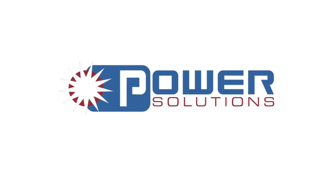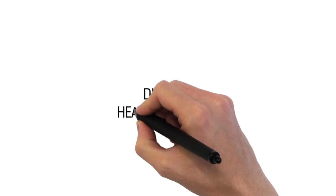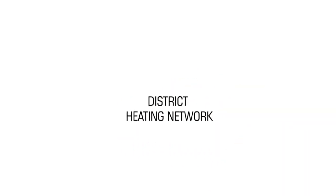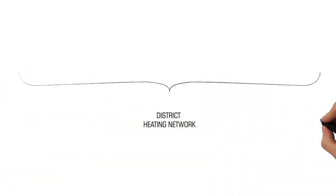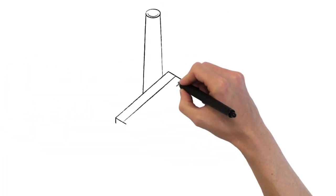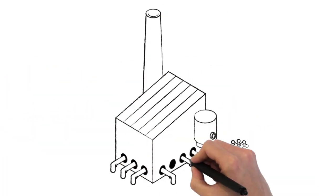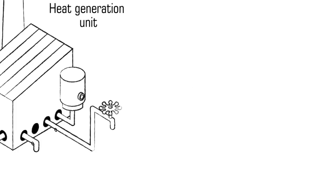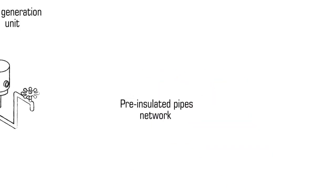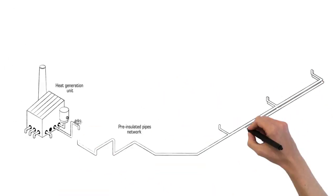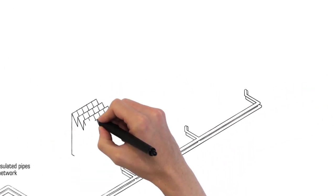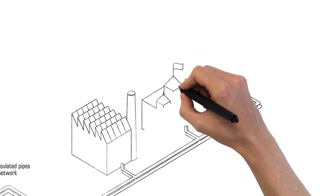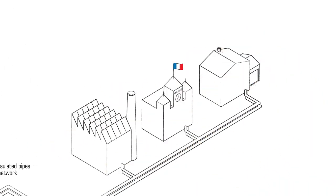Let's talk about heat networks. A district heating network is a set of facilities with a heat generation unit or a boiler, a network of pre-insulated pipes, and a building that needs to be heated.